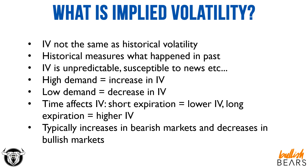Implied volatility is not the same as historical volatility. Historical volatility measures what happened in the past, while implied volatility is looking towards the future. IV is unpredictable — it's susceptible to news, events, anything that can give good or bad news with the price of a stock, or economic events.